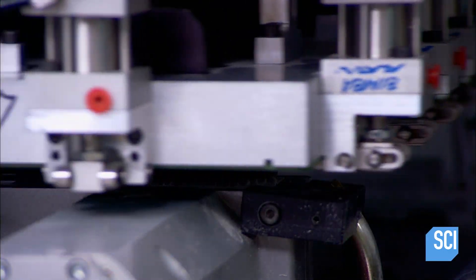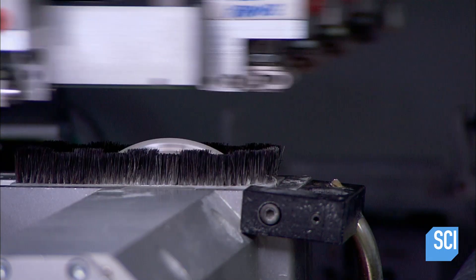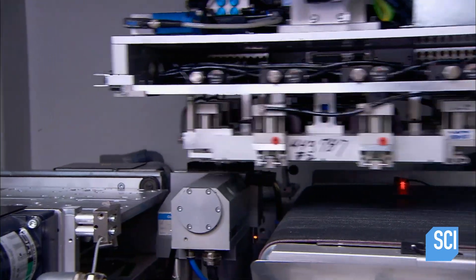When the board gets the all-clear, it moves to the next machine, which cuts it into separate circuit boards.